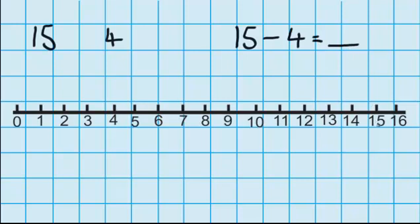So just like last time I find 15 on my number line and I need to count back four. So I'll have 14, 13, 12, and 11.